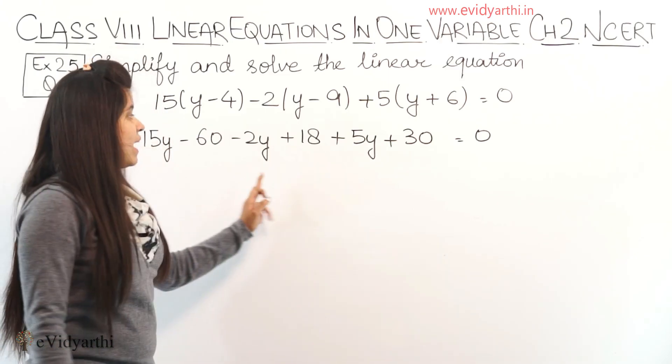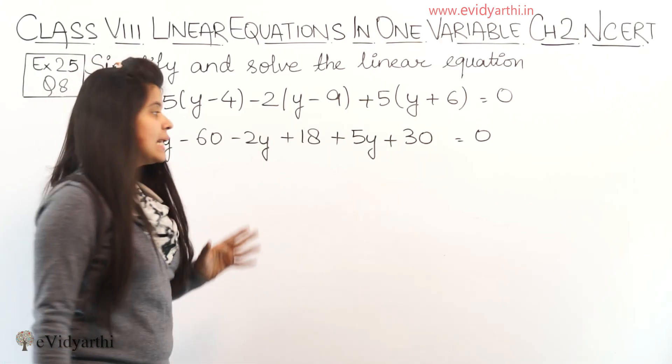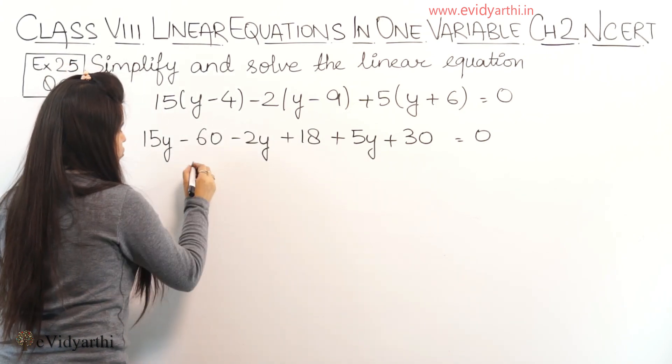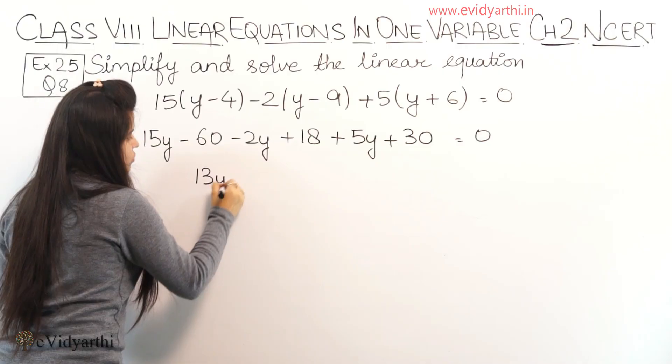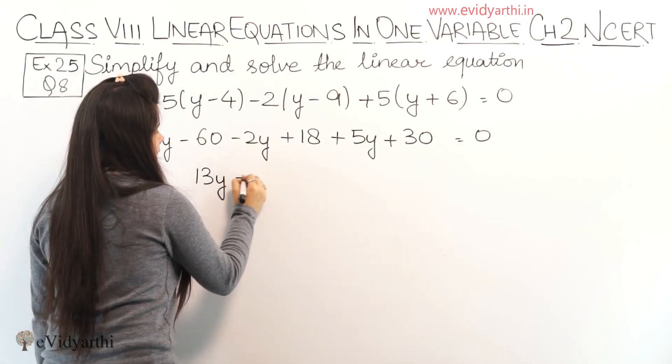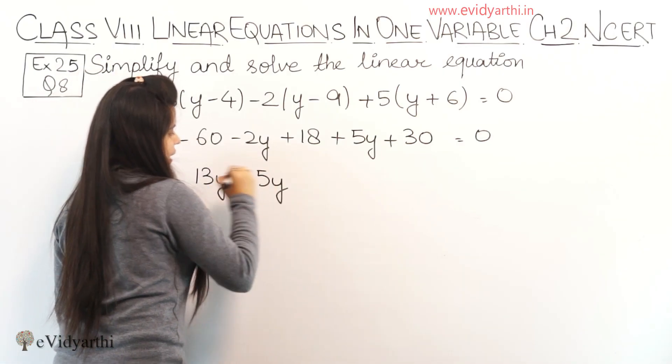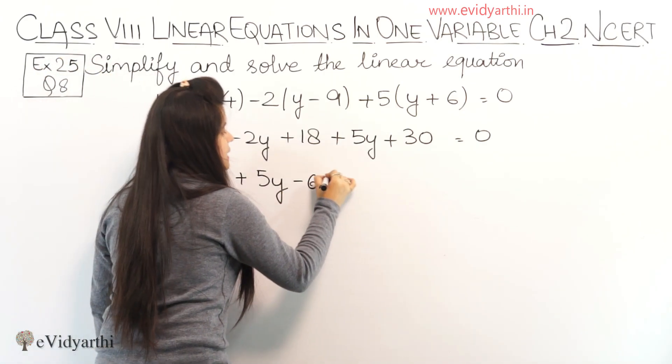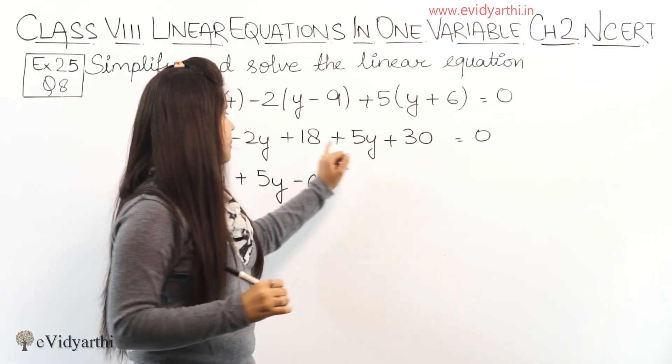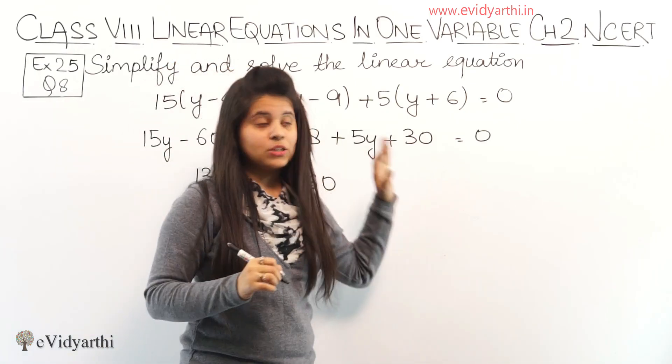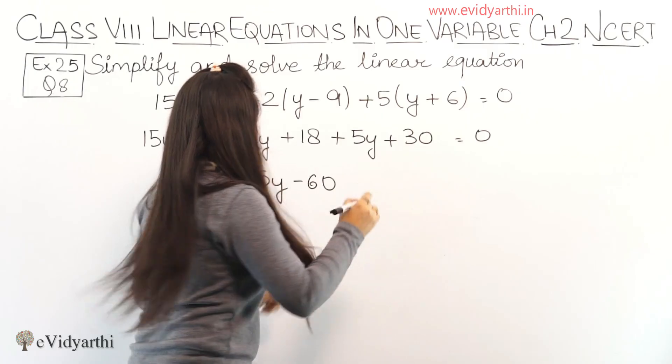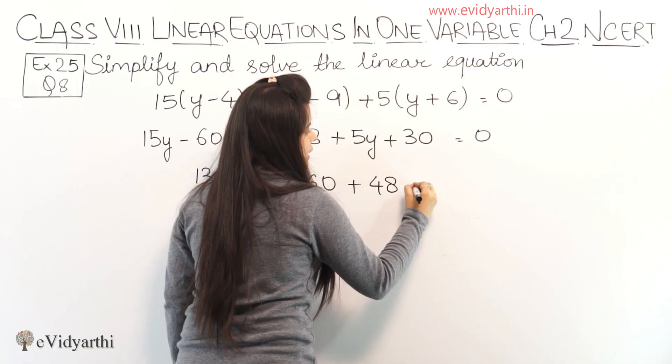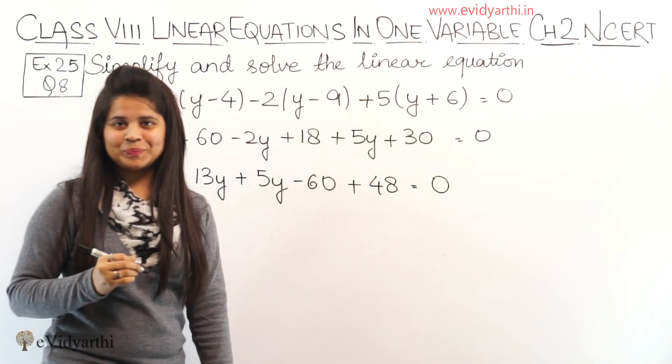So now y terms will be solved together and the rest separately. So we have 15y minus 2y. 15 minus 2 is 13, so this will be 13y. And plus 5y. We will solve it in one step. Then minus 60, let's write it as it is. And here we have two numbers, plus 18 and plus 30. So plus plus, the numbers will get 8 plus 0 is 8, and 3 plus 1 is 4. Equals to 0, right?